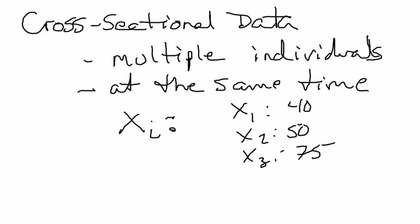It's very common for the individual to be a person, but it could also be a nation. You could talk about GDP per capita for the United States, GDP per capita for Canada — in that case the individuals would be countries. Or maybe you're talking about the unemployment rate across states, where the individuals would be the states of the United States: Alabama, Alaska, Connecticut, California, etc.